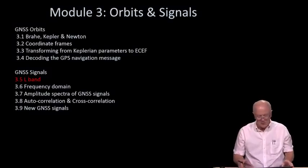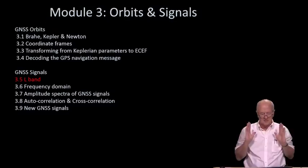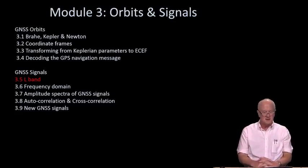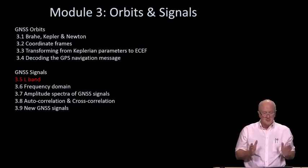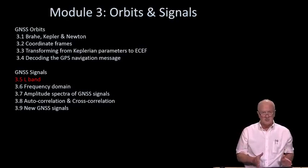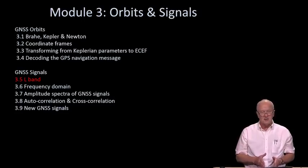Welcome back, everybody. Recall that in this snippet we're switching our attention from the GNSS orbits to the GNSS signals. I'd like to begin by reviewing a couple of basic things. First, I want to talk about the L-band and why that's so special for GNSS — really all the signals are located there. And then second, I want to talk about frequency domain descriptions of the GNSS signals.